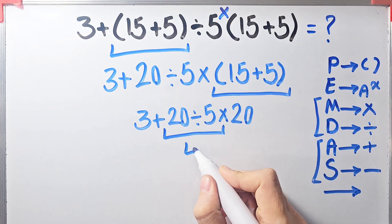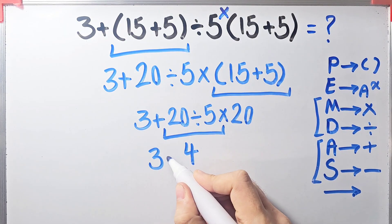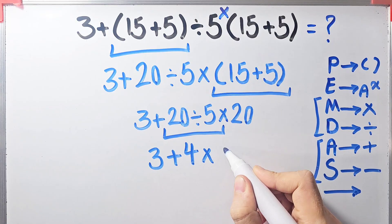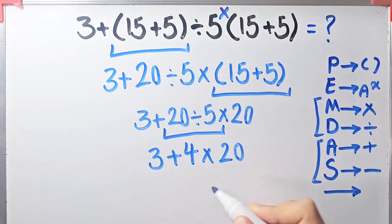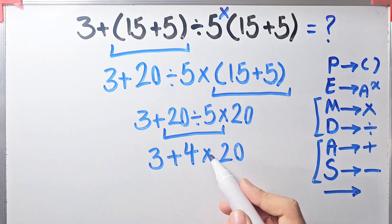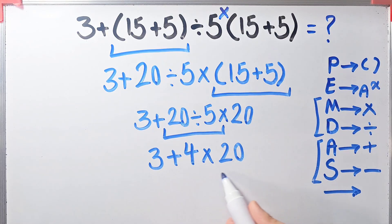Now the question is 3 plus 4, then times 20. Now we have addition and multiplication. In this step we simplify this multiplication because multiplication has higher priority than addition: 4 times 20 equals 80.